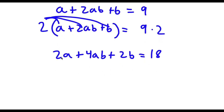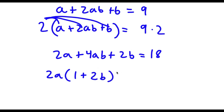Now, from 2a plus 4ab, I can actually factor out 2a. So now I have 2a times — well, 2a divided by 2a is 1, plus 4ab divided by 2a. 4a divided by 2a is simply 2, and then all that's left is b, so I'm left with 2b. So I have 2a times (1 plus 2b), and then we can't forget our plus 2b at the end. This is equal to 18.